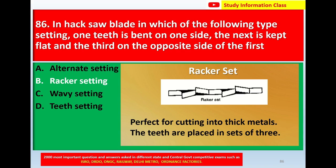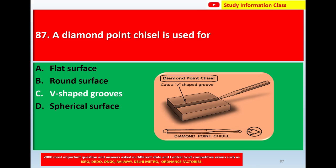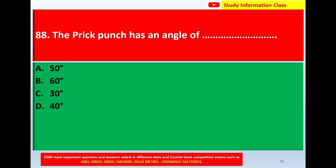Question number 87: The diamond point chisel is used for — option A: flat surface, option B: round surface, option C: V-shaped grooves, option D: spherical surface. Correct answer is option C: V-shaped grooves. The diamond point chisel cuts V-shaped grooves, as shown in the diagram.